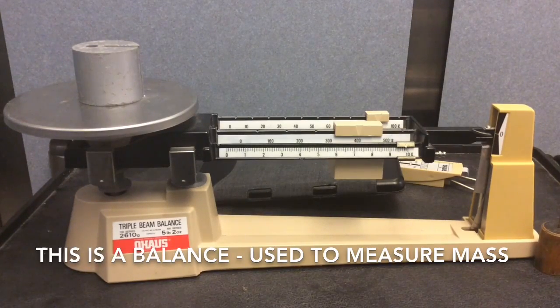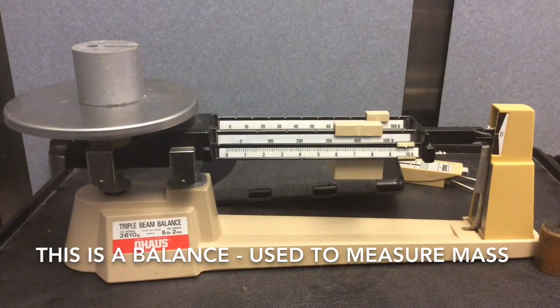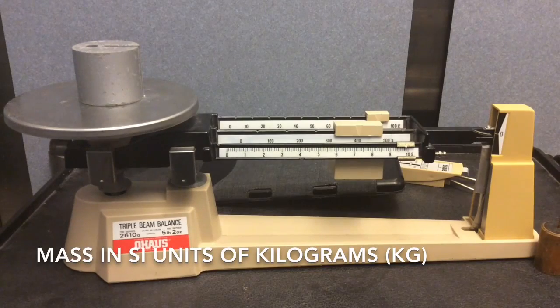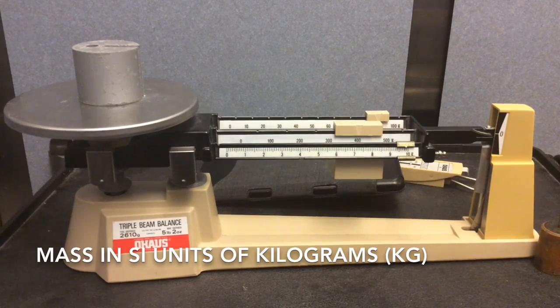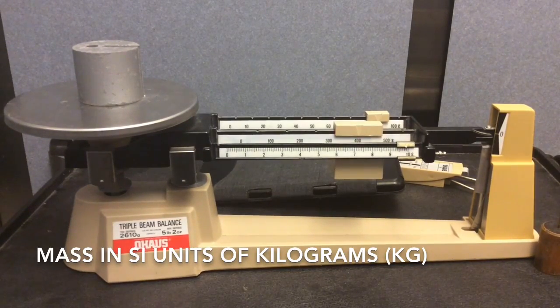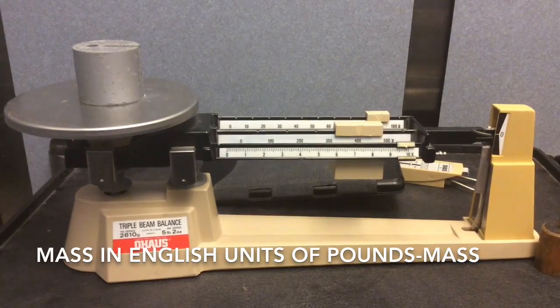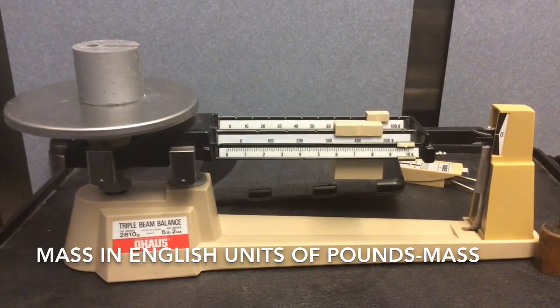This is a balance, a triple beam balance to be exact, and it's used to measure mass. Mass has units of kilograms in the metric system, or the SI, and in the English system, mass is measured in what we call pounds mass.